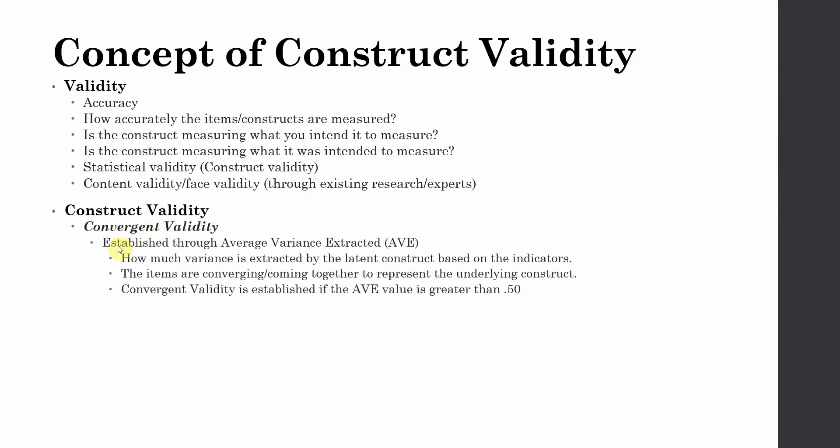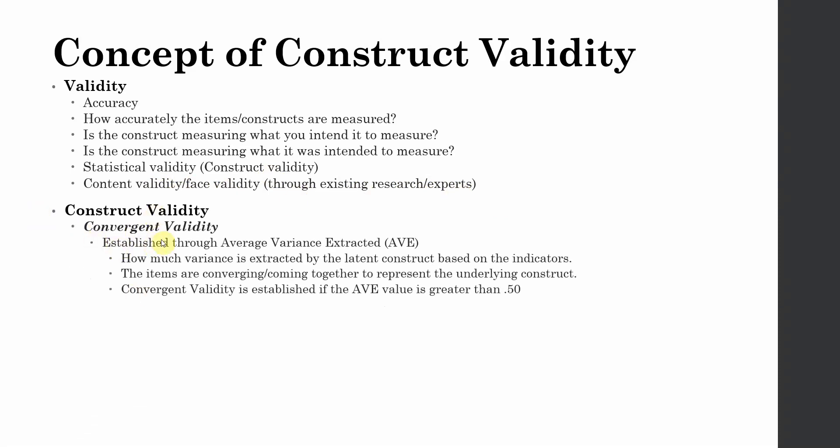Construct validity. Now there are two forms of construct validity. The first one is convergent validity, and it is established through average variance extracted.